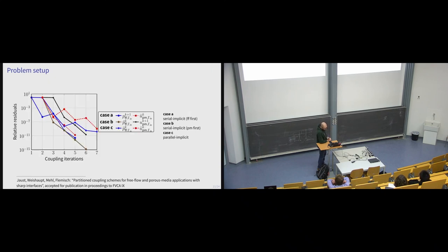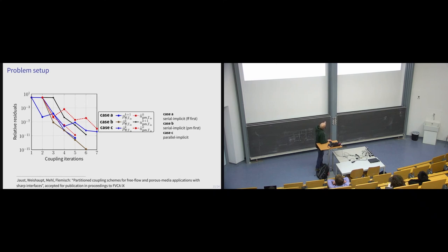Looking at coupling behavior and iterations: all coupling schemes work. Starting with the porous medium domain first in serial coupling gives clean convergence to smaller residuals. The other serial case starting with the free flow domain first and the parallel implicit case show more oscillation but also converge nicely. For some couplings, not much happens in the first few iterations because the interface data is initialized to zero — it may take one iteration before one solver sees anything from the other.